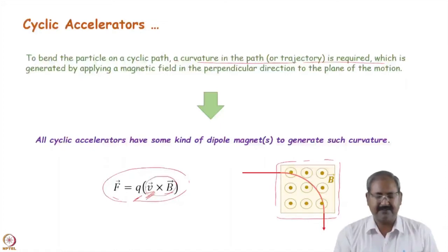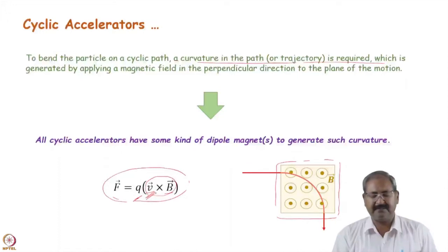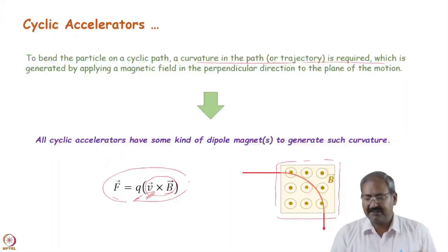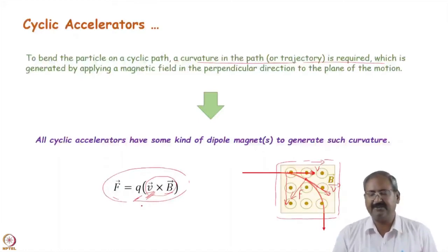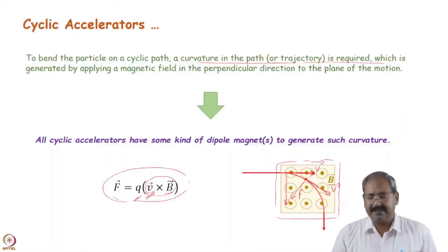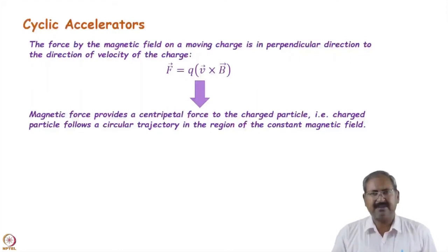With the magnetic field coming out of the screen, if we draw the tangent to the trajectory, v cross B points inward, perpendicular to v. As the particle moves, the force always remains perpendicular to v, imparting centripetal acceleration. Due to this centripetal acceleration the particle's trajectory becomes curved, and the particle can be sent on a circular trajectory using the magnetic field. Therefore, in all cyclic accelerators some kind of magnetic field is used to generate curvature in the design trajectory.